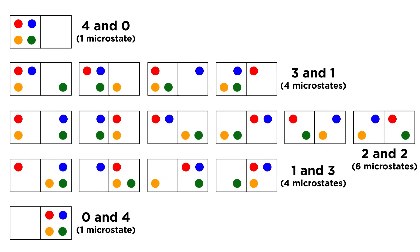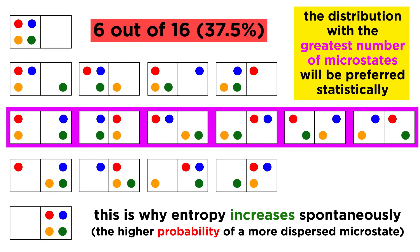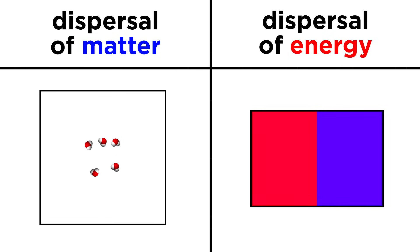If these balls are all different colors, some distributions will contain a number of different microstates. Statistical mechanics tells us that the most probable distribution will be the one with the most microstates, as in this case the probability of finding the system in one of these microstates with two and two is six out of the 16 total possible microstates. So this is a mathematical reasoning for why entropy tends to increase spontaneously in a closed system, whether this involves the dispersal of matter through space or the dispersal of heat energy from hot to cold objects.